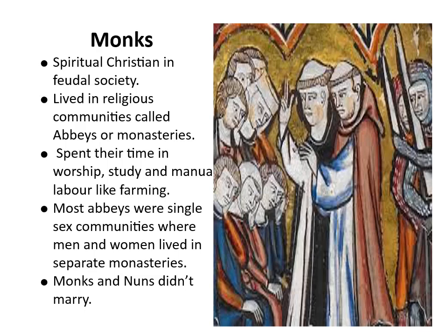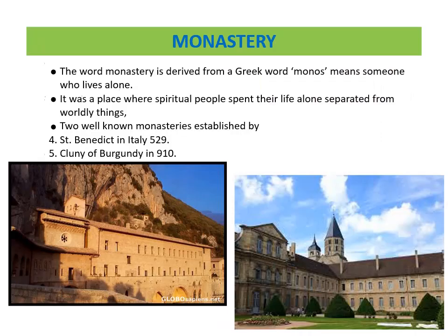Monks were spiritual Christians in feudal society. They lived in religious communities called abbeys or monasteries and spent their time in worship, study, and manual labor like farming. Most abbeys were single-sex communities where men and women lived in separate monasteries; monks and nuns did not marry. The word 'monastery' is derived from a Greek word 'monos' meaning someone who lives alone — it was a place where spiritual people spent their life separated from worldly things.